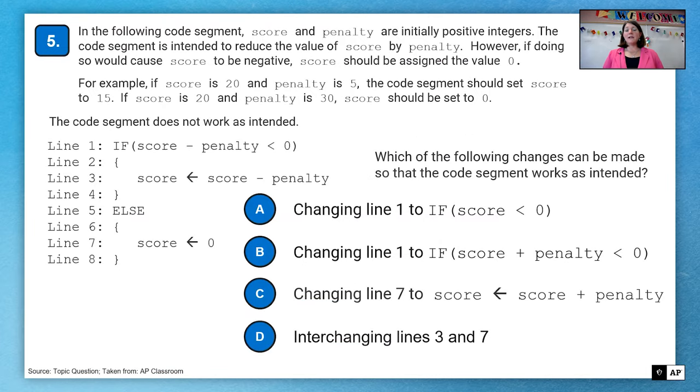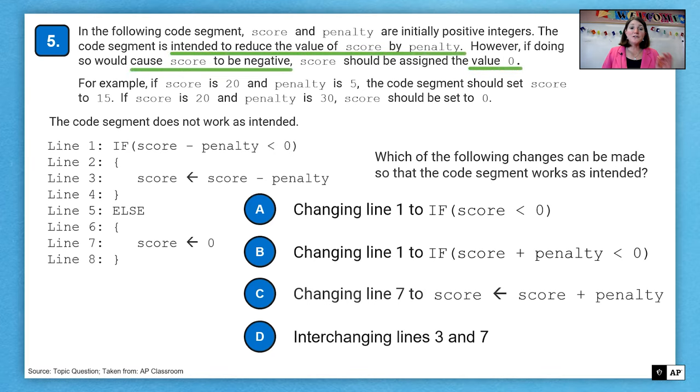Question five. In the following code segment, score and penalty are initially positive integers. The code segment is intended to reduce the value of score by penalty. However, if doing so would cause score to be negative, score should be assigned a value zero. For example, if score is 20 and penalty is five, the code segment should set score to 15. If score is 20 and penalty is 30, score would be set to zero. So let's take a look here at the code segment that does not work as intended.